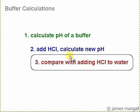Welcome to the third part of this tutorial on buffer calculations. The first part was calculating the pH of a buffer, then adding some HCl and calculating the new pH. In this part we're going to compare that with adding HCl to water.